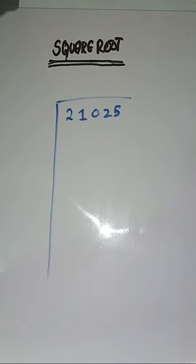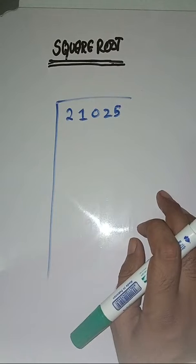Hello everyone, hope you all are fine. Welcome to my channel MathX World. Students, today we will learn how to find square root. We have to find square root of 21025. So first step is we have to make pairs from right to left like this.